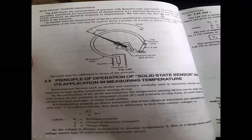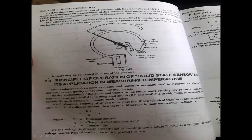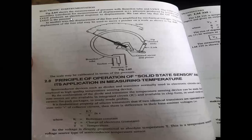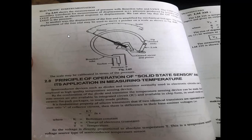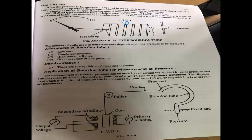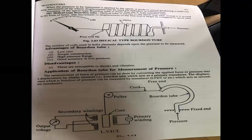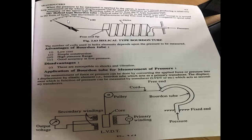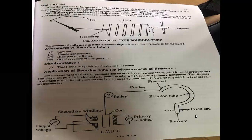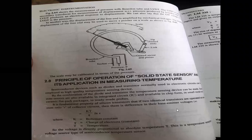The output voltage of the LVDT corresponds to the pressure applied. By measuring the output voltage on a calibrated scale, we can determine how much pressure was given — this is the measurement of pressure using LVDT.